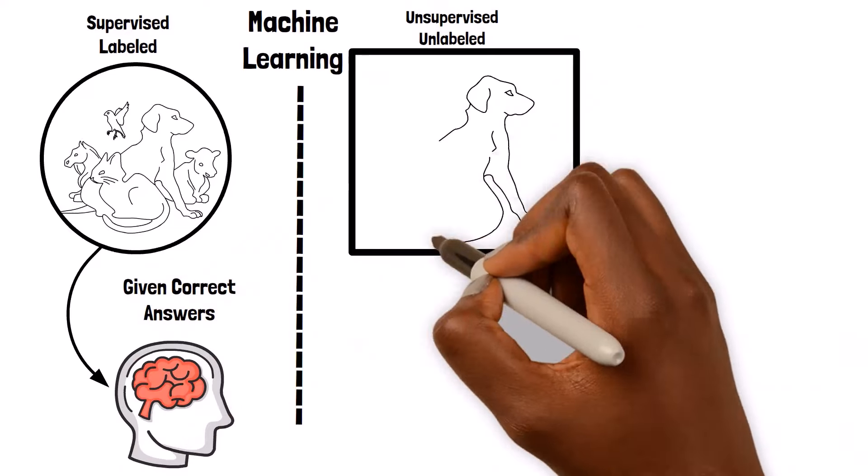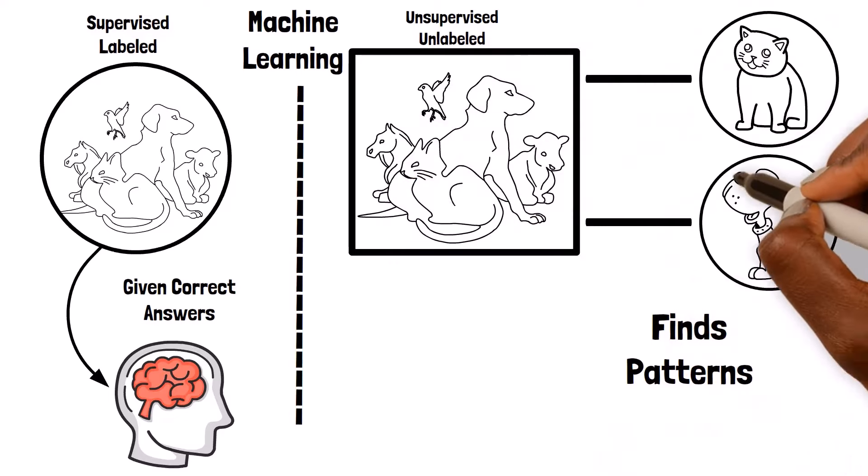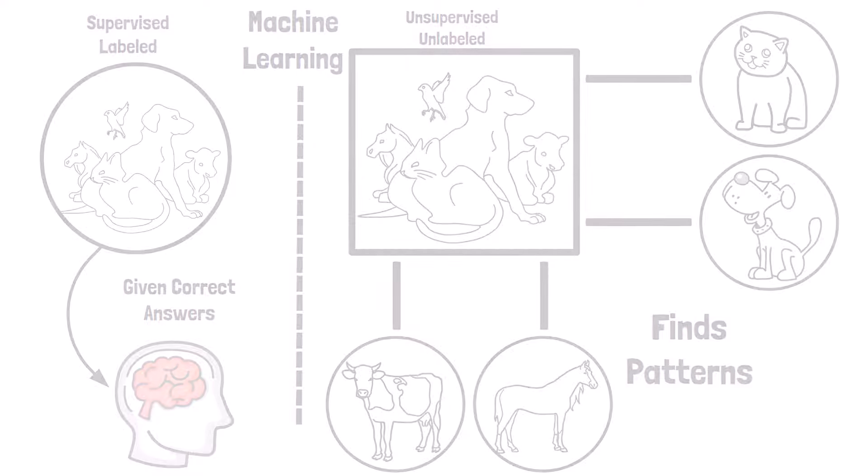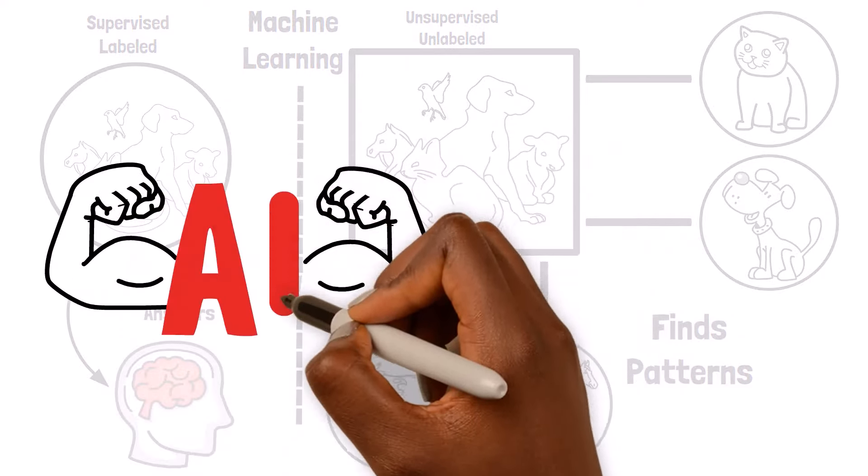In unsupervised learning, the algorithm finds patterns in the data on its own, without any labels. This ability to learn from data is what makes AI so powerful.